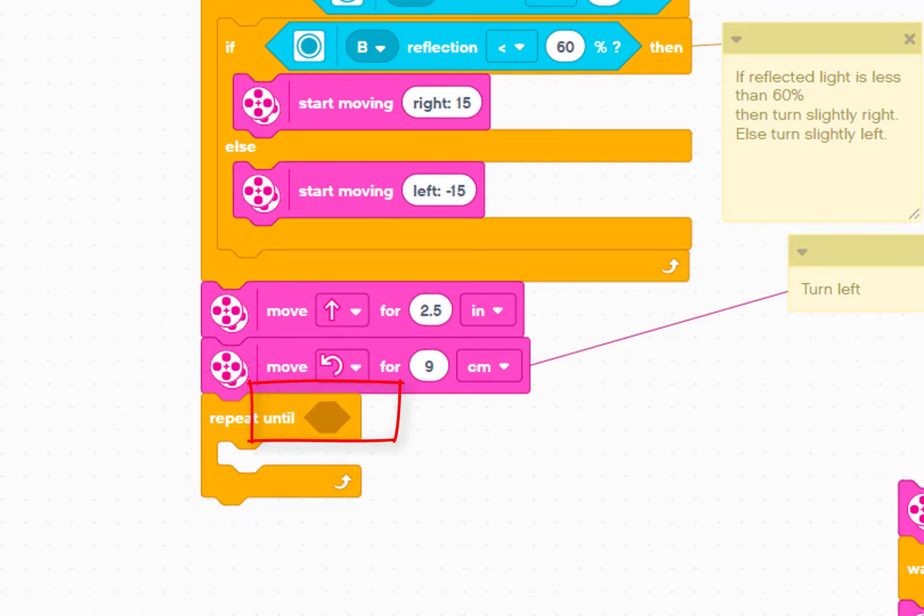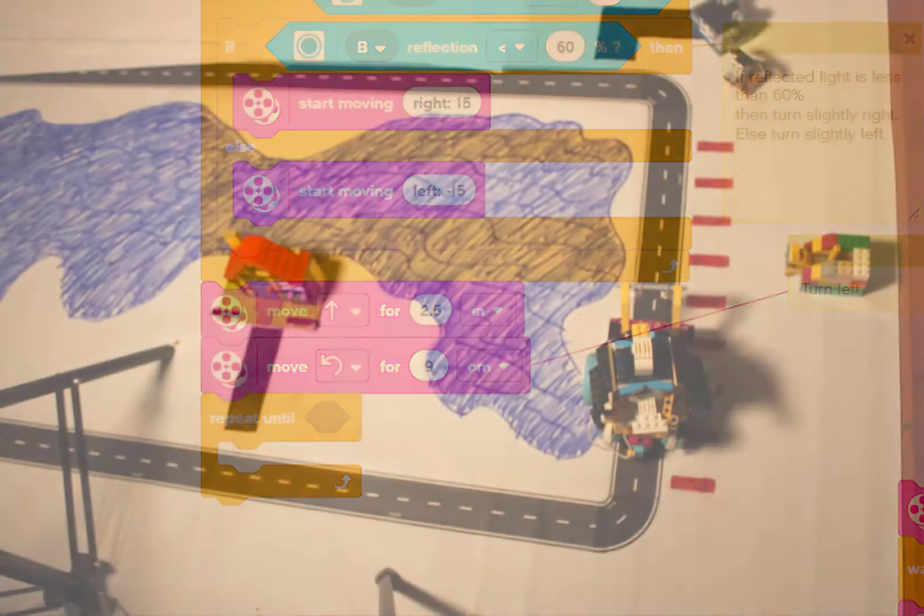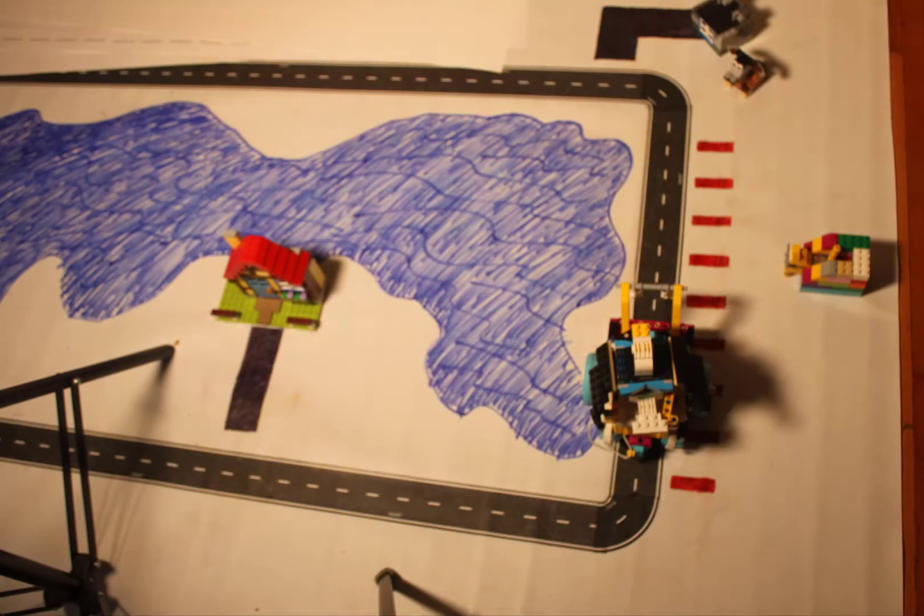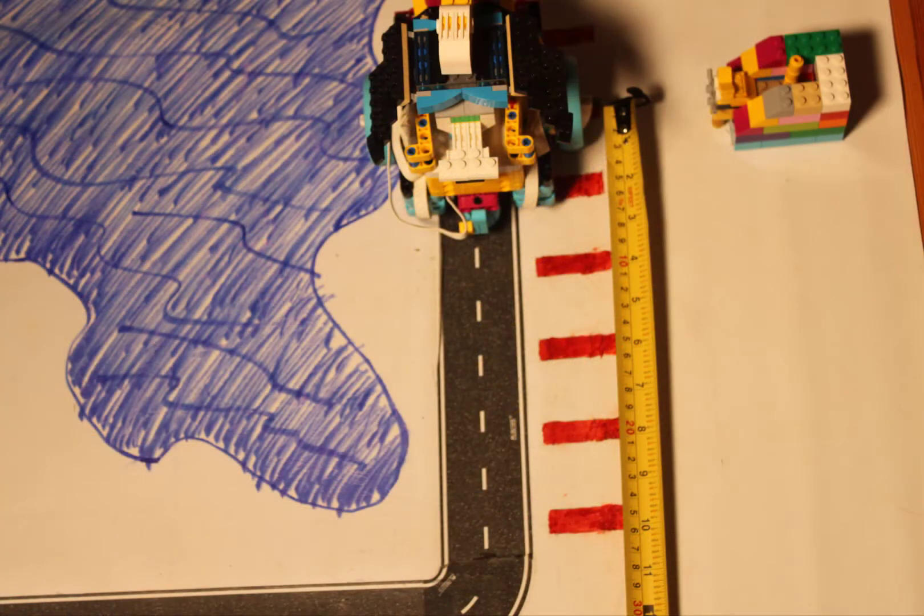In other words, when should the repeat stop repeating? We want to stop following the road when Chariot reaches the box where yellow is hiding. Let's use the distance that Chariot needs to go to decide when to stop repeating.